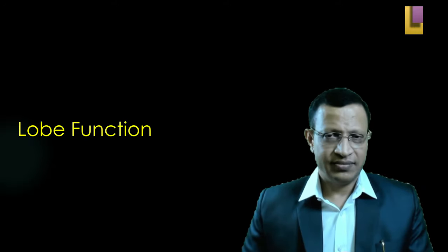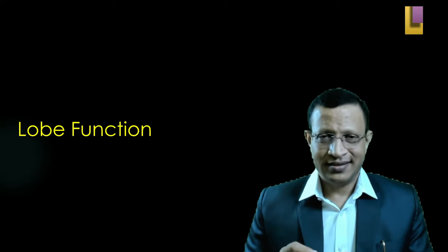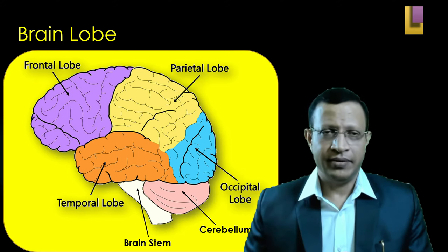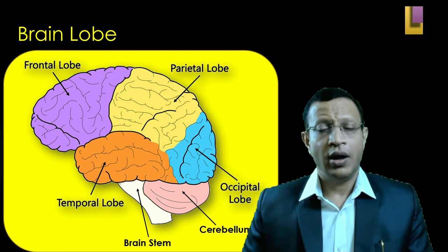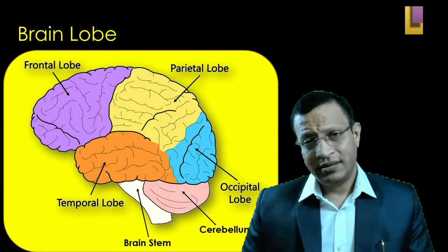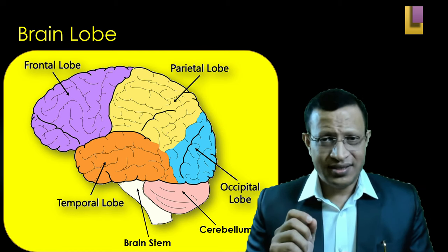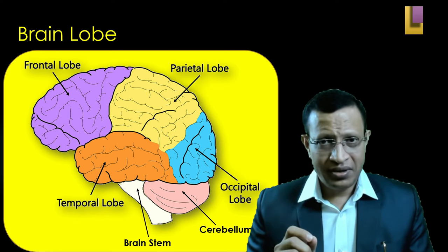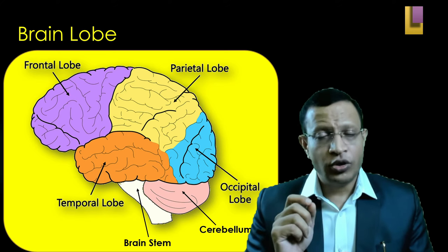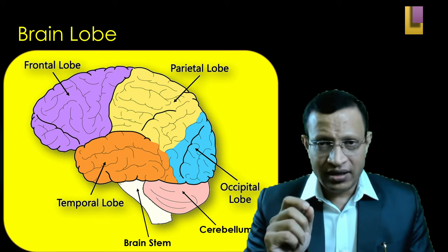Let's discuss lobe functions, because without that you will not be able to understand why we perform certain tests. As we know, the brain has various parts: frontal lobe, parietal lobe, temporal lobe, occipital lobe, cerebellum, and brainstem. Please remember, cognitive assessment is not specific to any one area of the brain — multiple parts of the brain will be involved in executing any function, as we perceive through eyes, nose, hearing, and touch, and execute through the motor system.